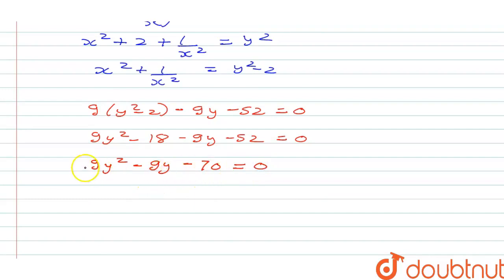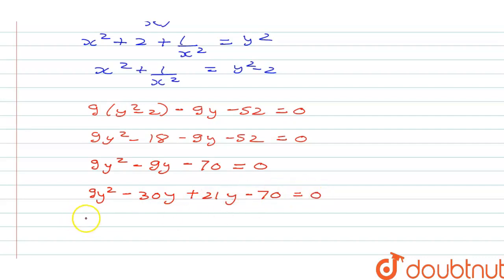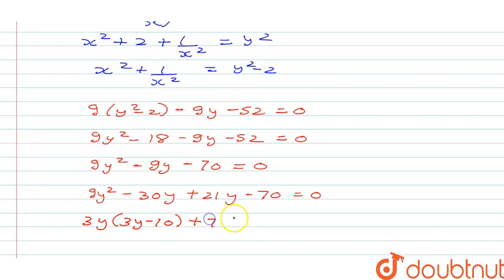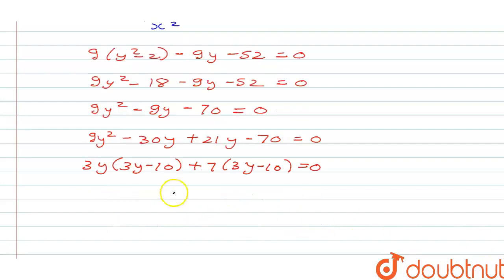Now we split the middle term using the product 70 times 9 equals 630. This gives us 9y squared minus 30y plus 21y minus 70 equals 0. Taking out common factors: 3y from the first pair and 7 from the second, we get two brackets: 3y minus 10 and 3y plus 7 equals 0.